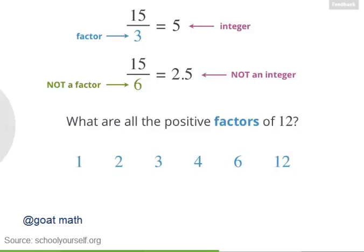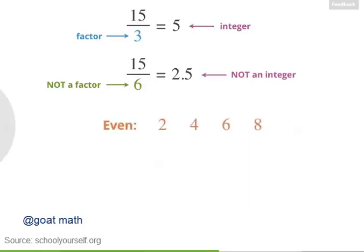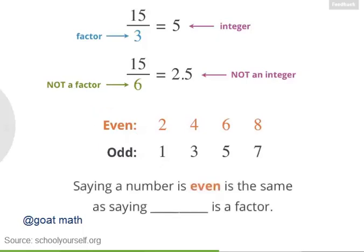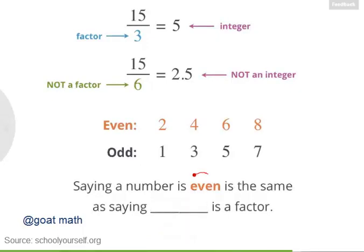Now you may remember that even numbers are integers like 2, 4, 6, and 8, while odd numbers include 1, 3, 5, and 7. So what does it really mean for a number to be even? Well, if a number is even, then that means it has a specific factor. Precisely. So saying an integer is even is exactly the same thing as saying that 2 is one of its factors. And saying a number is odd means that 2 is not a factor.